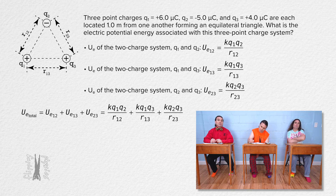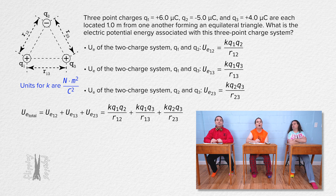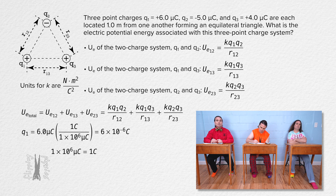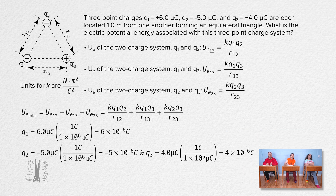To substitute in numbers we need to convert all charges to coulombs, because the units on the Coulomb constant k are newtons times meters squared over coulombs squared. Charge 1 equals 6.0 microcoulombs times 1 coulomb over 10 to the 6th microcoulombs, giving 6×10⁻⁶ coulombs. Similarly, charge 2 is −5×10⁻⁶ coulombs and charge 3 is 4×10⁻⁶ coulombs. All distances between charges equal 1.0 meters, so R12 = R13 = R23 = 1.0 meters.